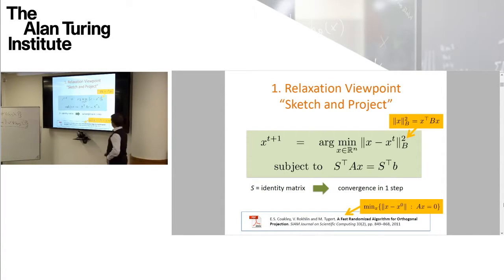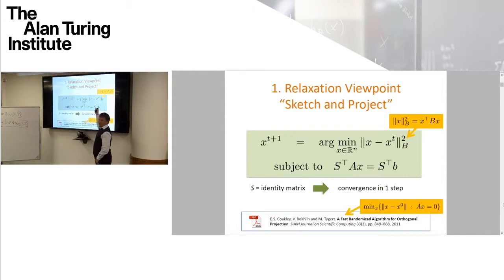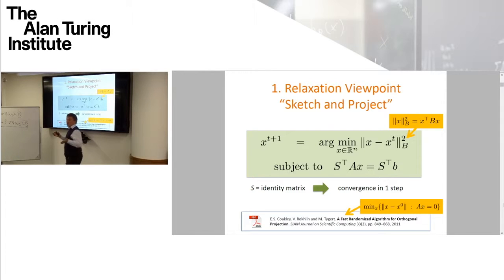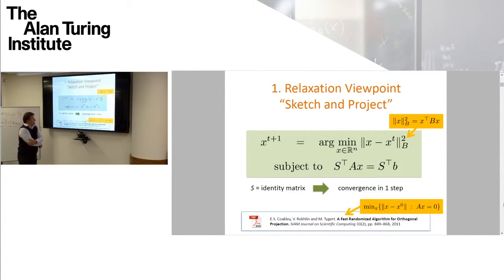If S is the identity matrix, which you can pick as a parameter of the method, then you're projecting x_t onto Ax = b, solving the system in one step. So the one-step algorithm — essentially cheating — is a special case of this family of algorithms.